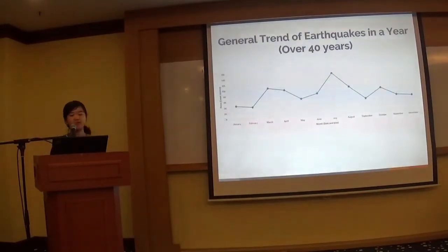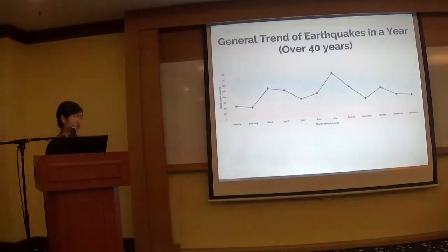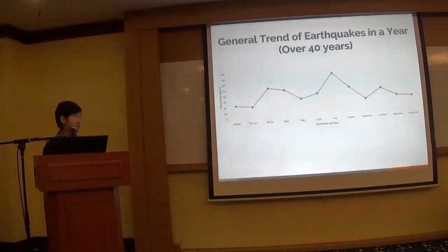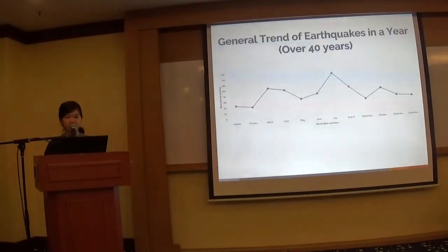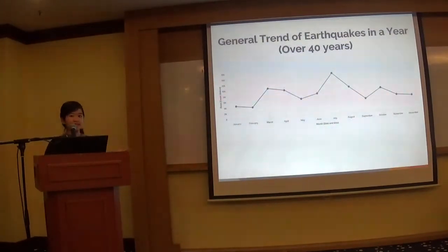From here I'm going to talk about my findings. This is the general trend of earthquakes over a year, across the 40 years I researched. As you can see, there are more earthquakes in the spring season, especially March and April, as well as the summer season, especially June, July, and August. There's also a small increase in October. This shows that Japanese people need to be more prepared for earthquake occurrences in these months, because the data shows there are generally more earthquakes then.